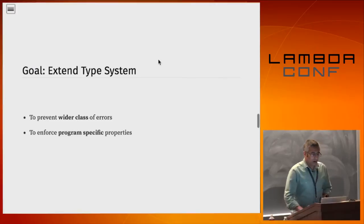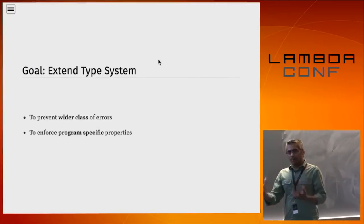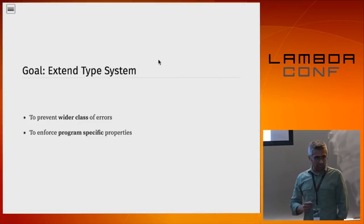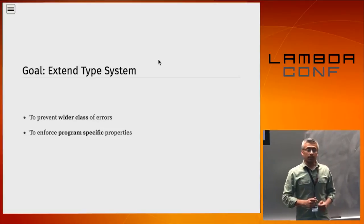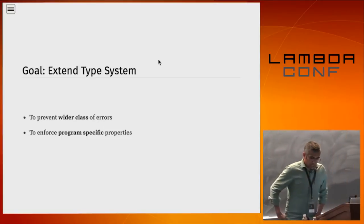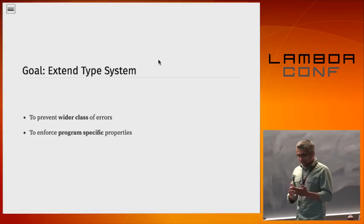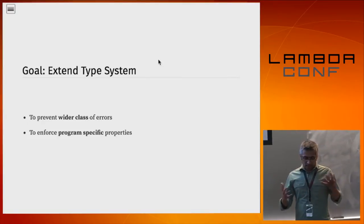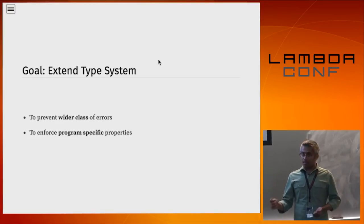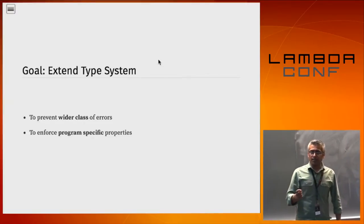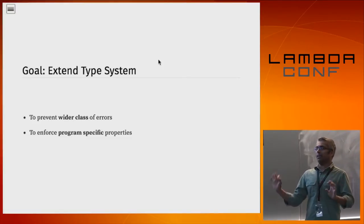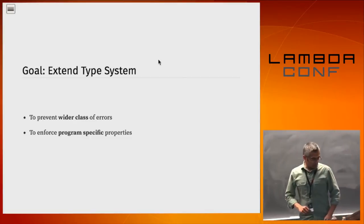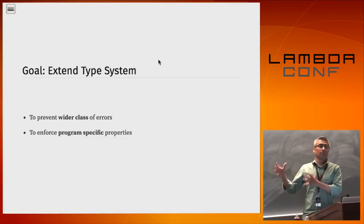Our goal is to develop a dependent type system that catches all these things at compile time without having to break everything down into tiny steps for the type checker. For those who were at the Idris talk, the reason you have to spell everything out to Idris is that the underlying decision procedure is primarily unification. Unification is fantastic for many things — like the GADTs Richard demonstrated — but there are many other theories for which unification is not the best idea. We're going to use a somewhat different technology.